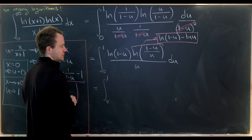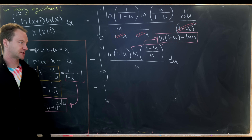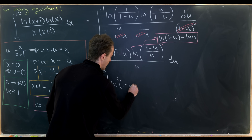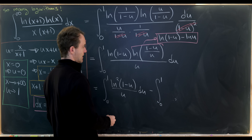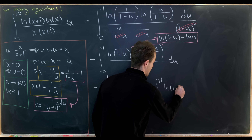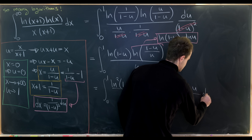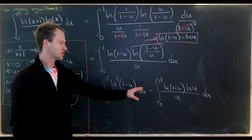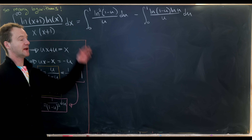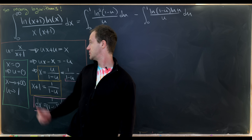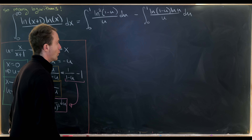Distributing ln(1-u) over those two terms splits this into two integrals: the integral from 0 to 1 of ln²(1-u)/u du, minus the integral from 0 to 1 of ln(1-u)·ln(u)/u du. We will now evaluate each of these two integrals one at a time.